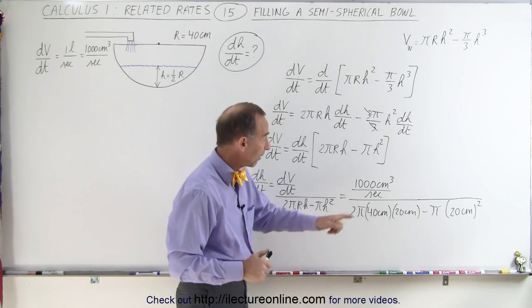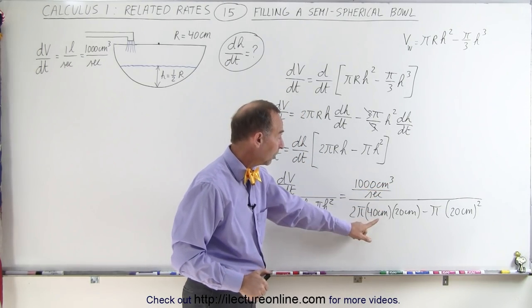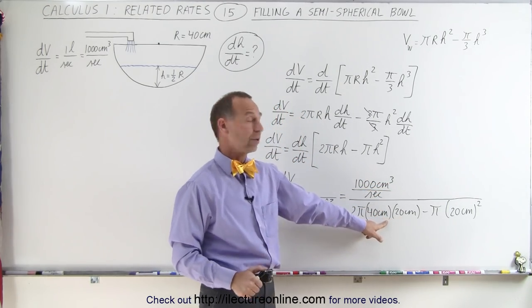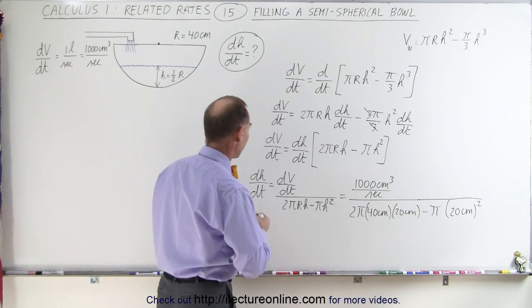Now notice in the numerator we have centimeters cubed per second, in the denominator we'll have centimeters squared, which means we'll end up with centimeters per second.